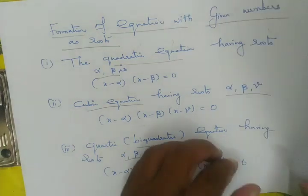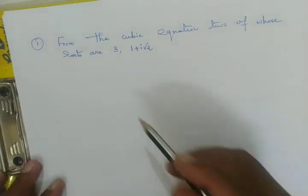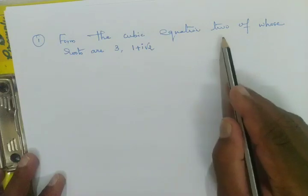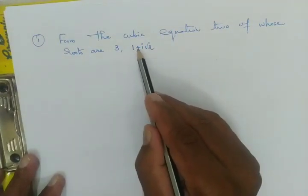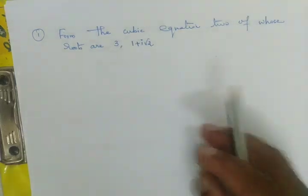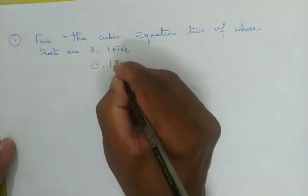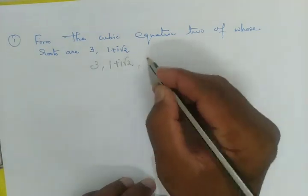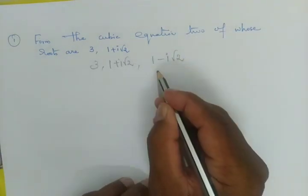So as a base point, we will see a few problems. Now we will look at 2 roots from a cubic equation. Two of those roots are 3 and 1+i√2. If we look at the root, first we are going to find the third root. The third root is 1-i√2. This is the third root.